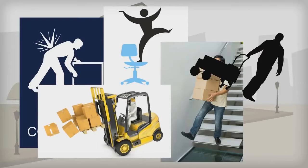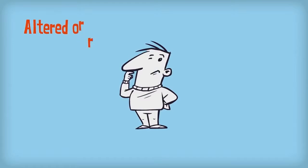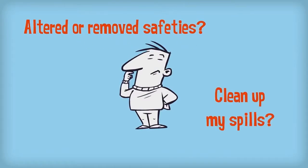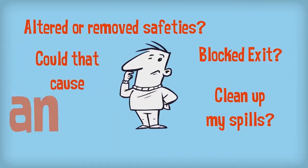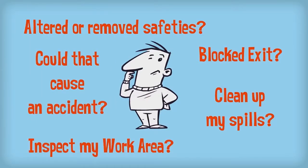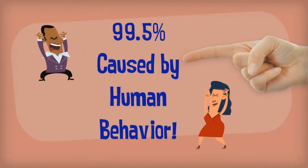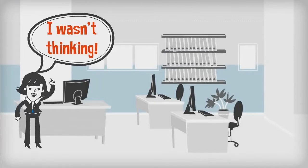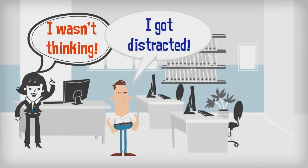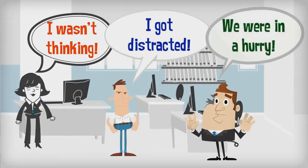The worst kind of unsafe act is deliberately creating an unsafe condition. Have you done anything to make the job more risky for you or for others? Although it is difficult to foresee every condition or potential hazard, it's hard to find an accident that could not have been prevented. The person injured may not have caused the conditions that caused the injury, but something they did, or something another person did, directly led to the incident.